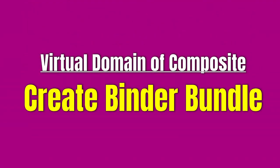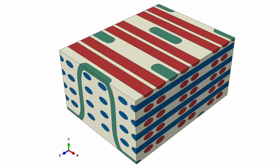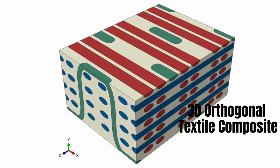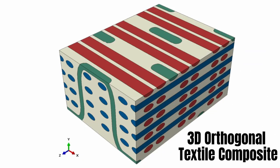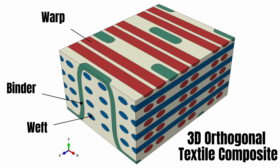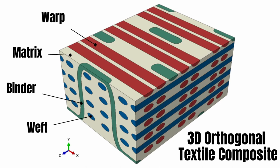The kind of virtual domain we'll expect to get is this type — the 3D orthogonal composite. We can clearly identify this part as the binder, then this is the weft yarn, the other one is the warp yarn, and of course this part is the matrix. That's what we are going to get.